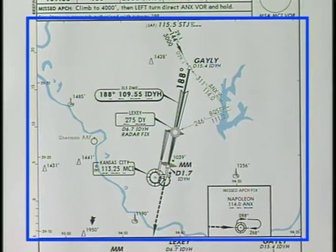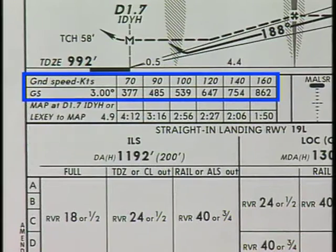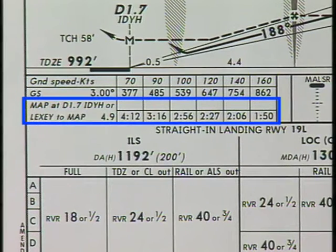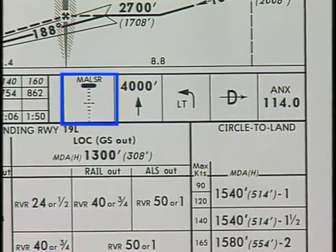Next, review the plan view to familiarize yourself with the procedural tracks, nav aids, and headings. The profile view shows the appropriate altitudes for the approach as well as the headings and fixes along the approach course. Check the conversion table to determine descent rate information. Also, note the appropriate time to the missed approach point in case you must fly a localizer approach due to an equipment malfunction. In this section, review the approach lighting so you know what to expect when you see the runway environment.